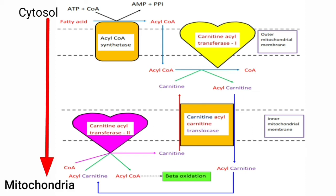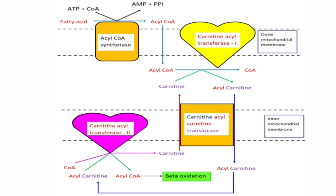Coming to the mechanism of carnitine transport: fatty acids are first activated to form acyl CoA. Any fatty acid in its CoA form is called an activated fatty acid. The most common fatty acid oxidized by beta oxidation is palmitic acid, whose active form is palmitoyl CoA. This activation is done by an enzyme called acyl CoA synthetase, present in the outer mitochondrial membrane.